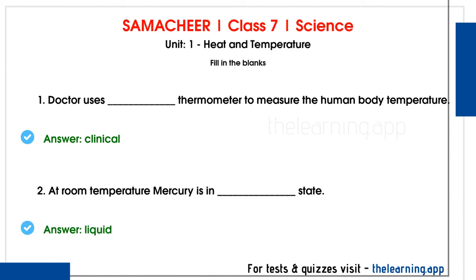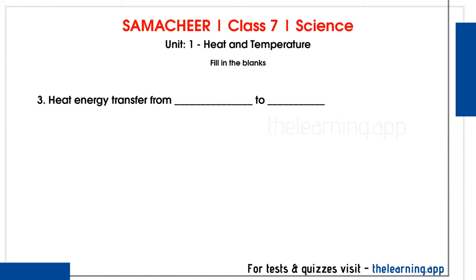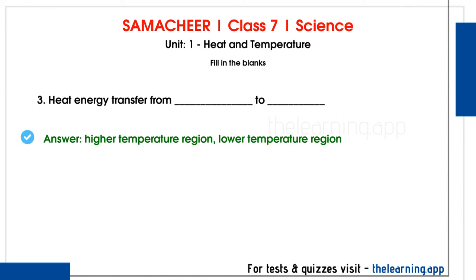Third question: heat energy transfers from dash to dash. Heat energy transfers from a high temperature region to a low temperature region. For example, if we have hot water and a cup at room temperature, heat will transfer from the hot water to the cooler cup. So heat energy transfers from high temperature to low temperature.